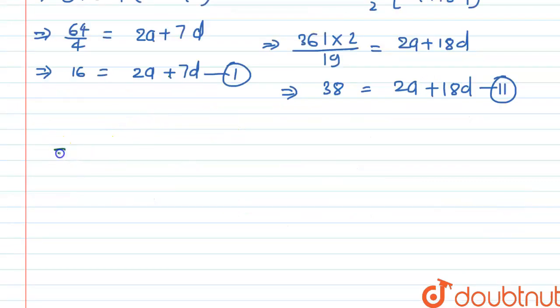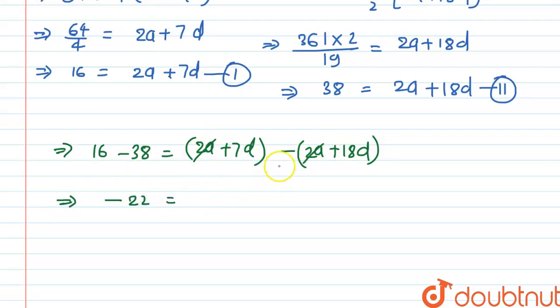Now on subtracting both the equations we will get 16 minus 38, that is equal to 2a plus 7D minus 2a plus 18D. And here 2a will be cancelled out, that is minus 22 is equal to minus 11D. And we can say that D will be equal to 22 by 11, this is equal to 2.